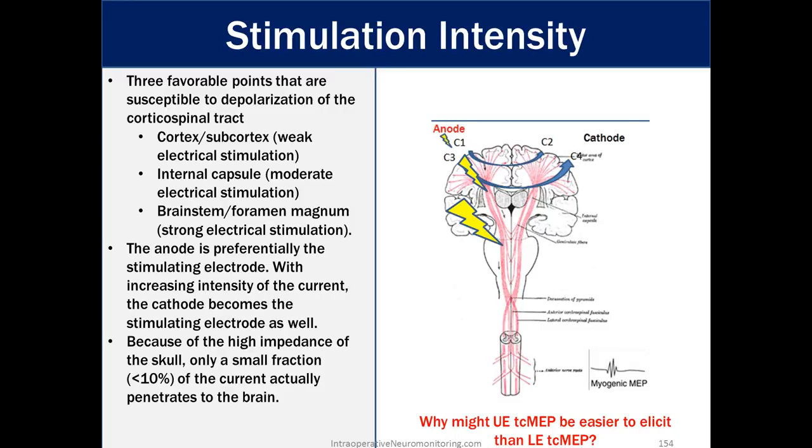The anode is preferentially the stimulating electrode. With increasing intensity of current, the cathode becomes a stimulating electrode as well. That's important to know. As you go up in intensity, your cathode will eventually start to produce a deep enough signal and also affect that contralateral cortex and also give some CMAPs on what you would say ipsilateral side of your stimulation. Because of the high impedance of the skull, only a small fraction, less than 10% of the current, actually penetrates the brain. And that is also dependent upon your electrode placement. Wider route, you'll have greater penetration versus the C1, C2 narrow positioning.